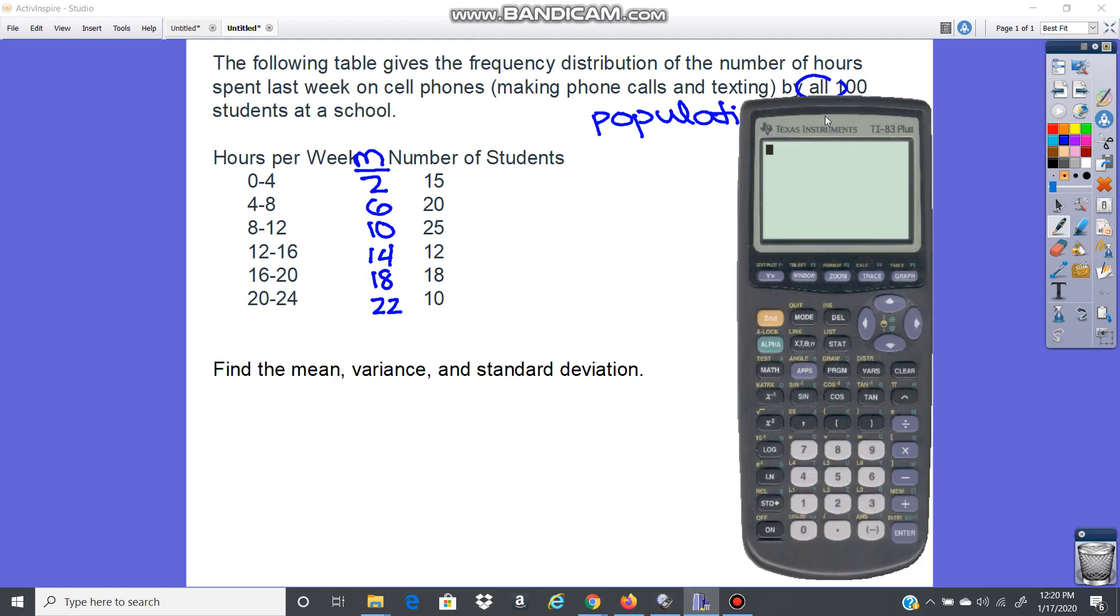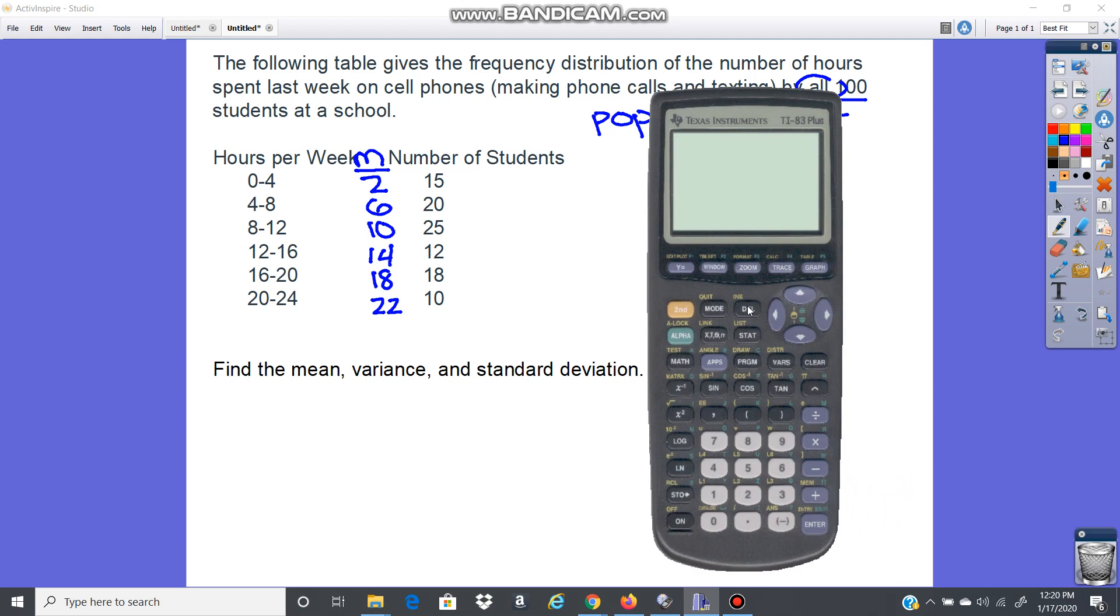So we're going to pull up our calculator. We're going to go to stat, edit. Now I have some stuff in here, so I'm going to scroll up and clear, enter, so I can put my list in. All right, so the first list is going to be midpoint. So two, six, 10, 14, 18, 22.